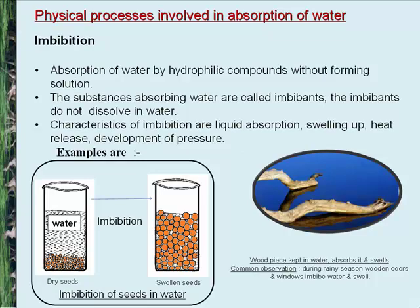Physical processes involved in the absorption of water: the absorption of water by plants is known as water uptake. The initial step in water absorption is imbibition. The outer layer of the root hair wall imbibes water molecules, and then these enter into the cell sap. The physical processes involved in absorption of water are imbibition, diffusion, and osmosis.